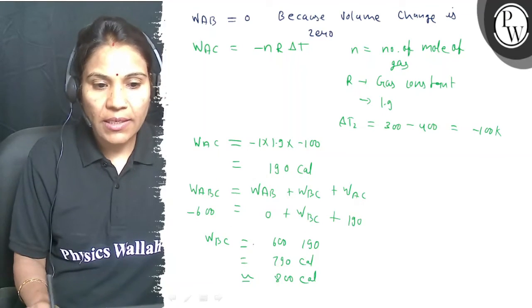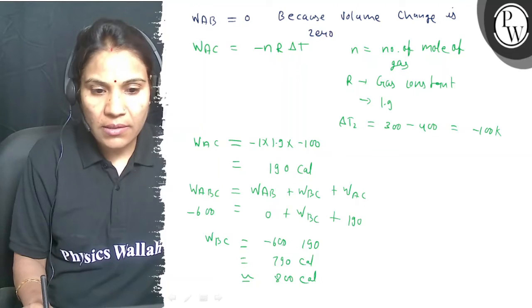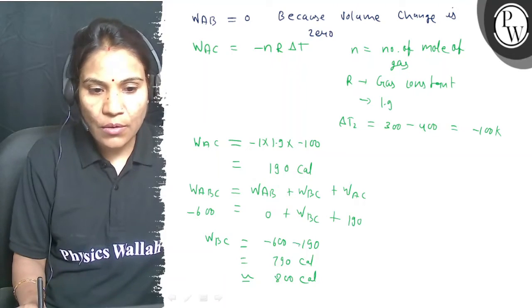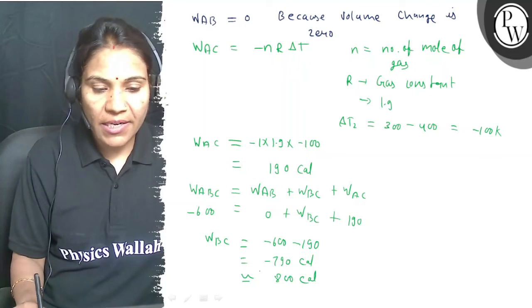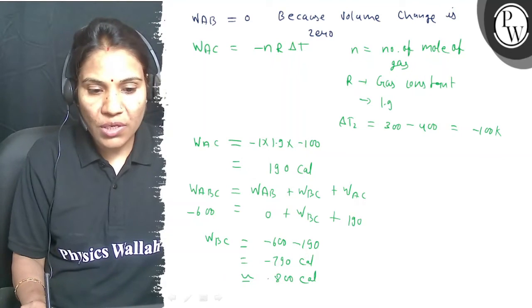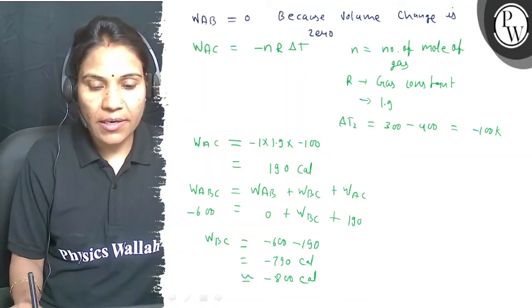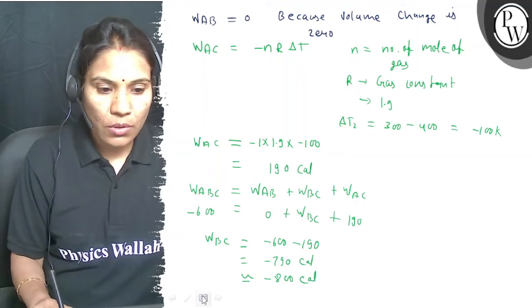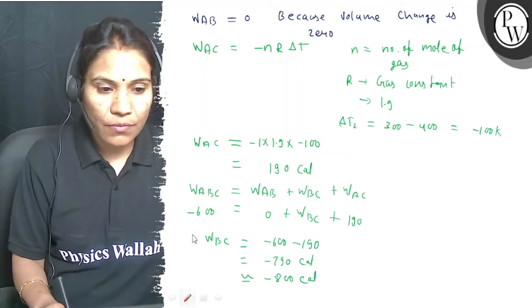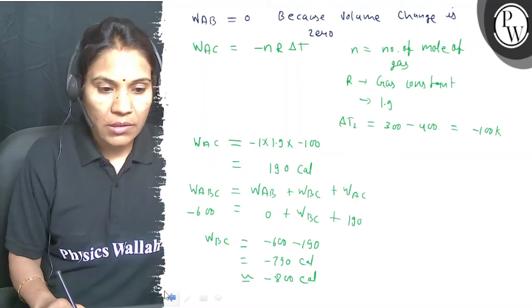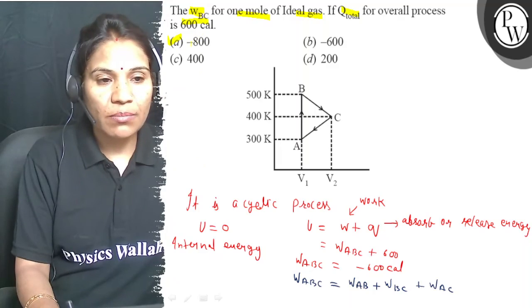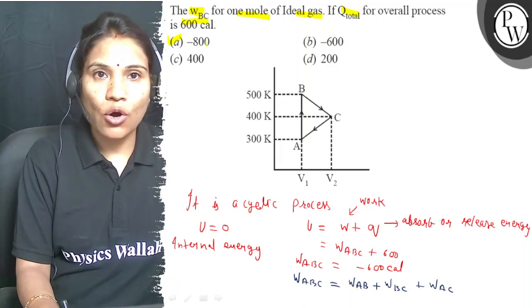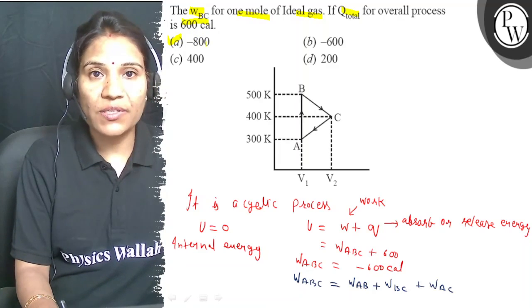W BC is equal to minus 600 minus 190, so it equals minus 790, or it is about equal to minus 800 calories. So the right answer of this equation is A, which is minus 800. Hope you understood it well. Best of luck, thank you.